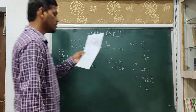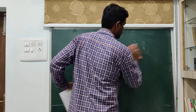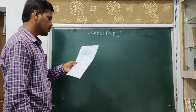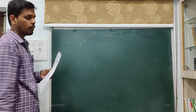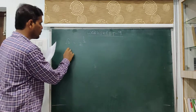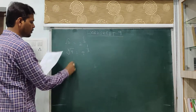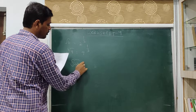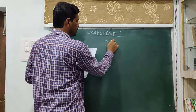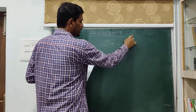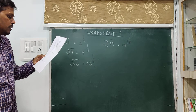Next: write the following in exponential form. Root 2 in exponential form is 2 power 1 by 2. Cube root 9 is 9 power 1 by 3. 5th root 20 is 20 power 1 by 5. 7th root 19 is 19 power 1 by 7. That is the third question.